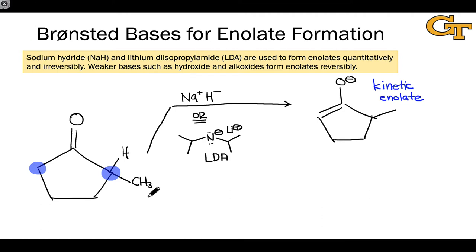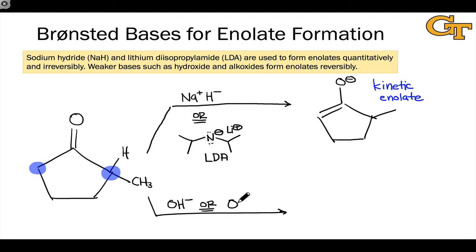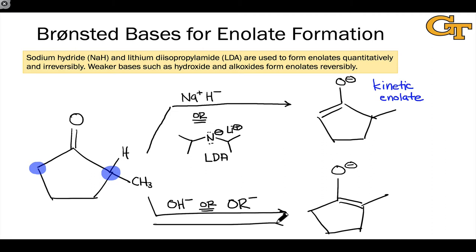Either sodium hydride or LDA works great for generating the kinetic enolate. We can also use relatively weak bases to form enolates. The most common examples are hydroxide (OH⁻) and alkoxides (OR⁻). These bases, which in a pKa sense are weaker than enolates, generate the more substituted enolate selectively. Because these bases are weaker than enolates, they generate the enolate reversibly in generally very small quantities, as these reactions are generally favored in the reverse direction.